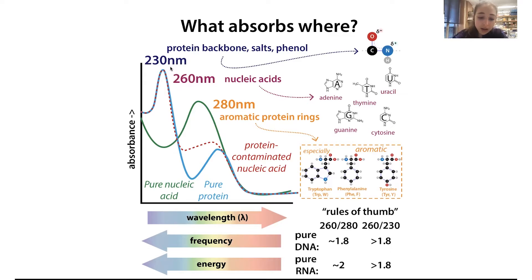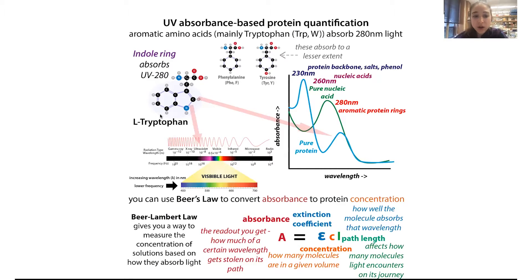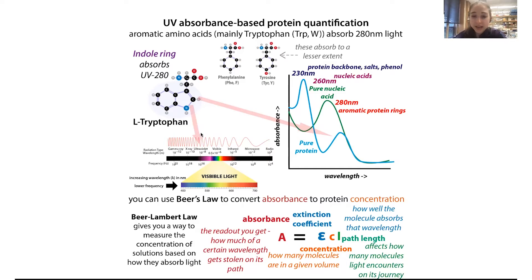When talking about protein absorbance, the main absorbance comes from tryptophan. All three aromatic amino acids have resonance in their rings, which brings the distance between the relaxed and excited electron states down to a point within the range of our machines, letting us detect this absorbance.